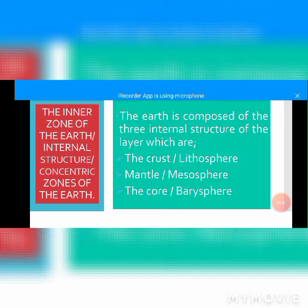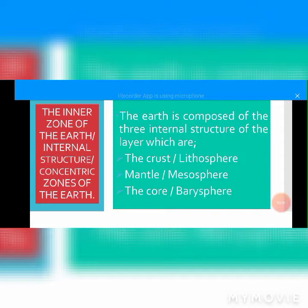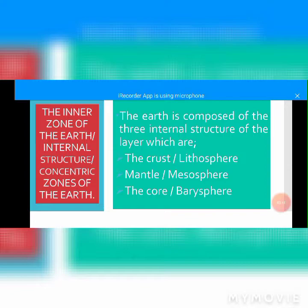The basic part of today is the inner zone of the earth, also called the internal structure or concentric zone of the earth. When we talk about the inner zone of the earth or internal structure of the earth, the earth is composed of three internal layers: the first is the crust, also called the lithosphere; the second is the mantle, also called the mesosphere; and the third is the core, also called the barysphere.